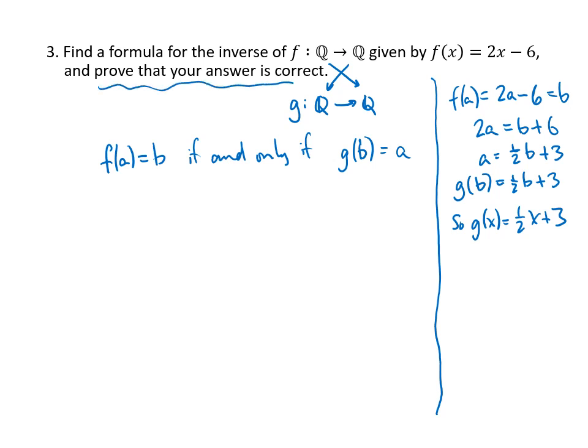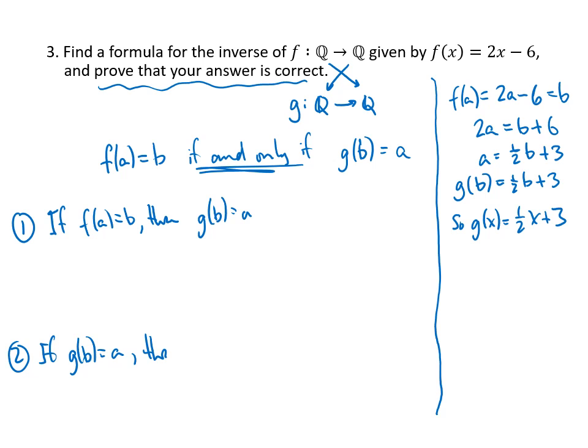Okay, so that's how we find a formula. But now we have to prove that our answer is correct, which means we actually have to prove this if and only if. Now proving an if and only if is two if-thens. We have to prove if f(a) = b, then g(b) = a. And we also have to prove if g(b) = a, then f(a) = b.